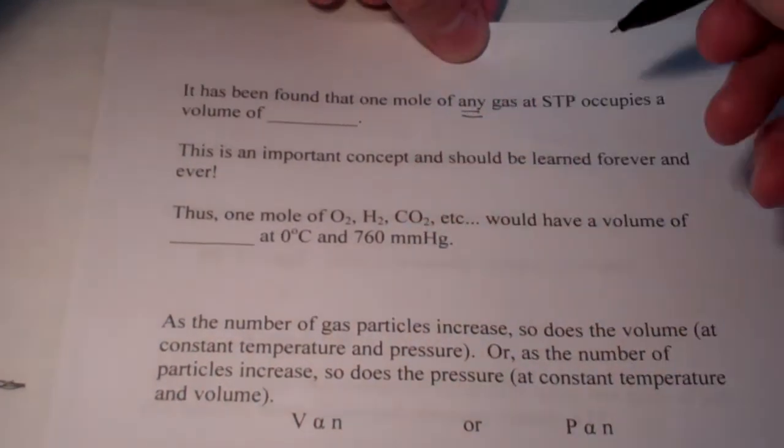Now, we can use that as a conversion factor. If we have a gas at STP, one mole of a gas at STP will have a volume of 22.4 liters. Now, this is an important concept, and you should learn it forever and ever. Thus, one mole of oxygen, hydrogen, carbon dioxide, helium, sulfur hexafluoride, does not make a difference what the gas is. Each of these, if I had one mole of them, would have a volume of 22.4 liters. That's zero Celsius, and 760 millimeters of mercury, or one atmosphere.